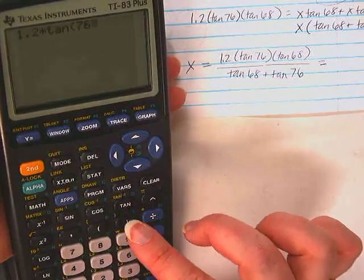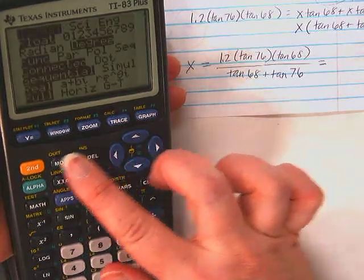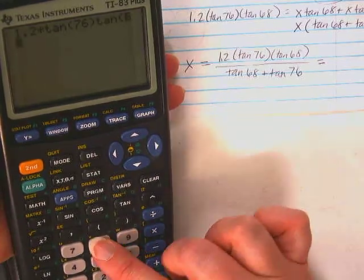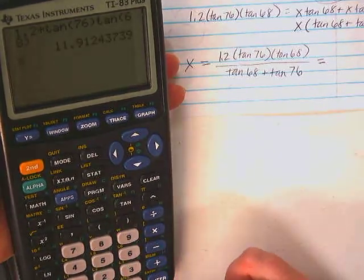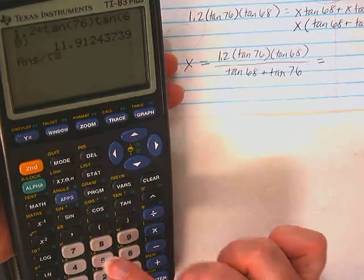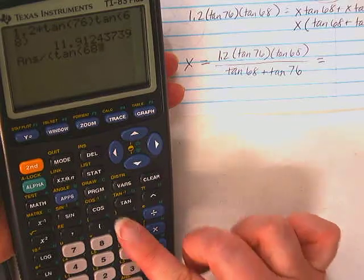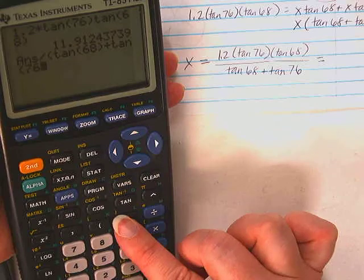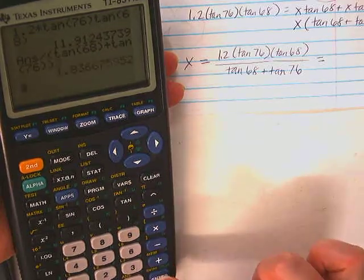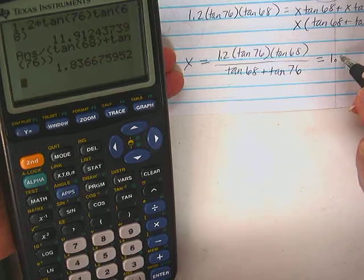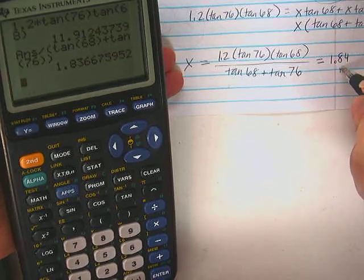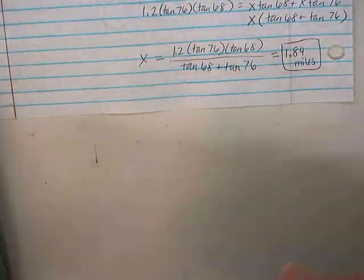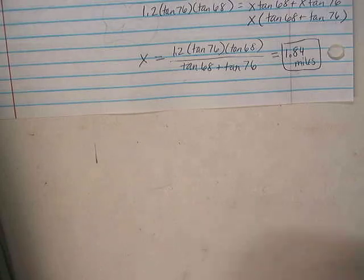So 1.2 times tangent 76. I better make sure my mode is right, huh? Oh, it is. Okay, good. Times tangent 68. So there's the numerator, and then I'm going to divide that by tangent 68 plus tangent 76. So 1.84 miles.